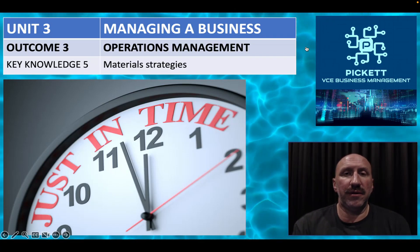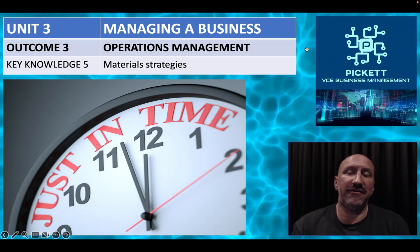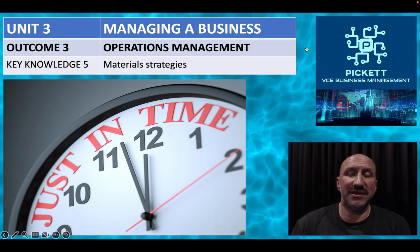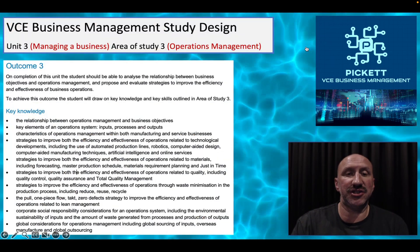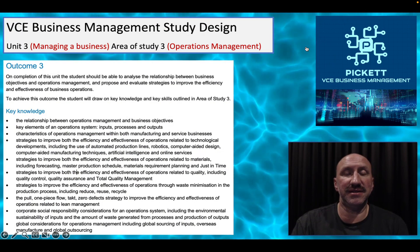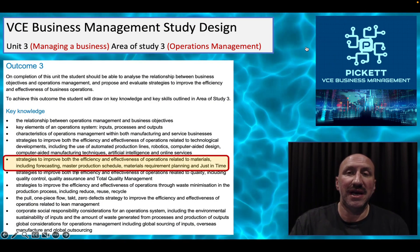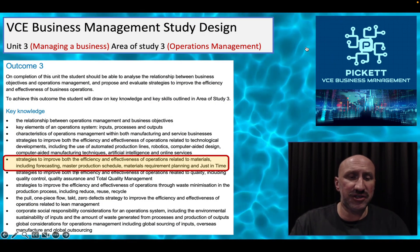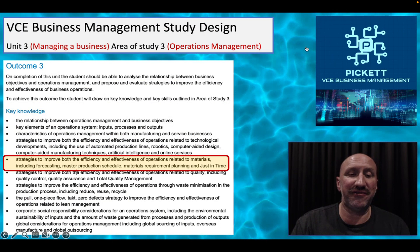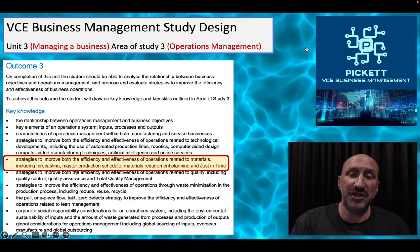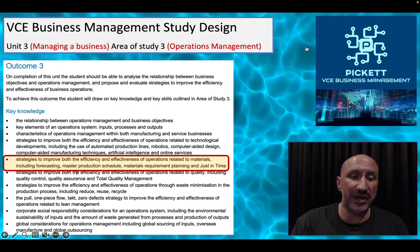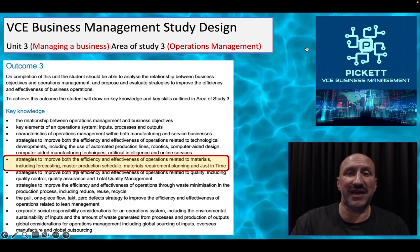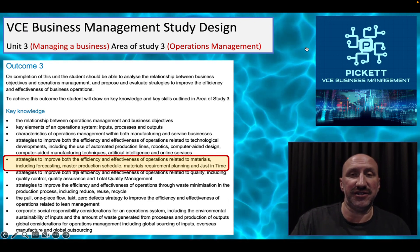Welcome back to the fifth key knowledge dot point in the third outcome of unit three. This one is all about materials strategies. Here is our study design and the key knowledge dot point: strategies to improve both the efficiency and effectiveness of operations related to materials, including four specific strategies.